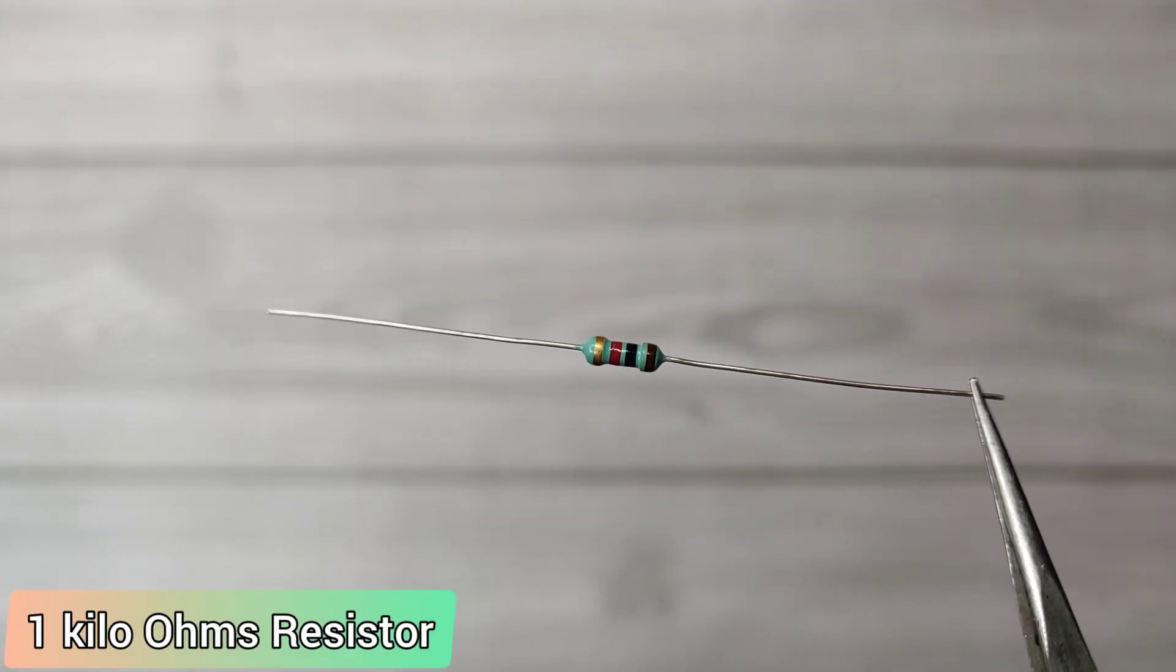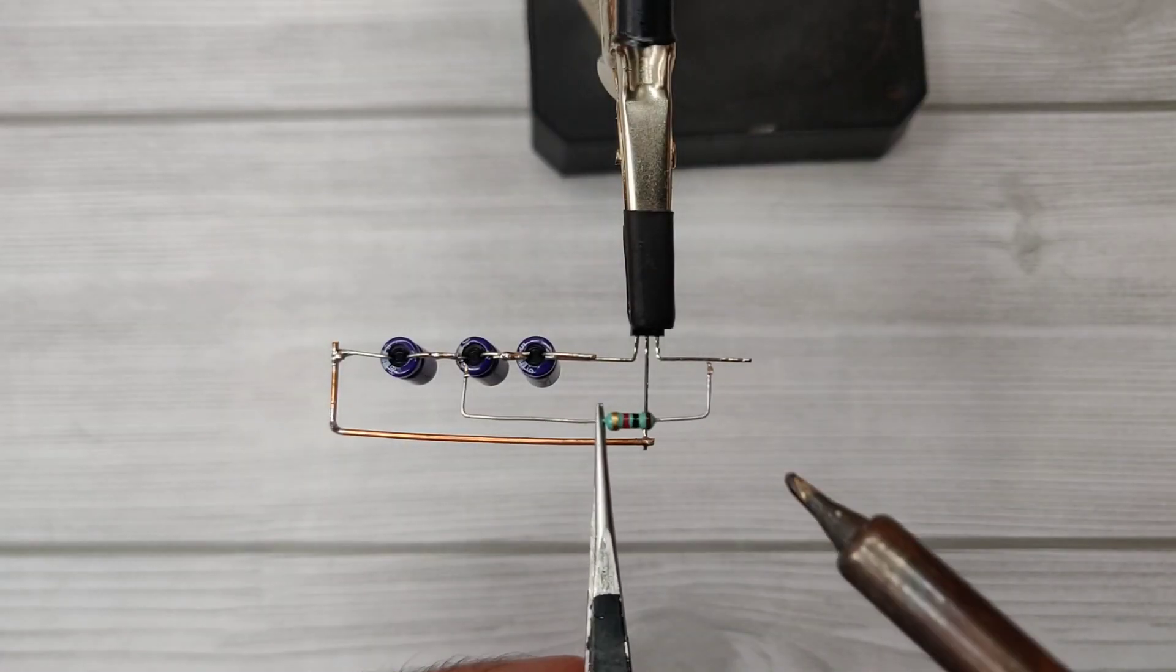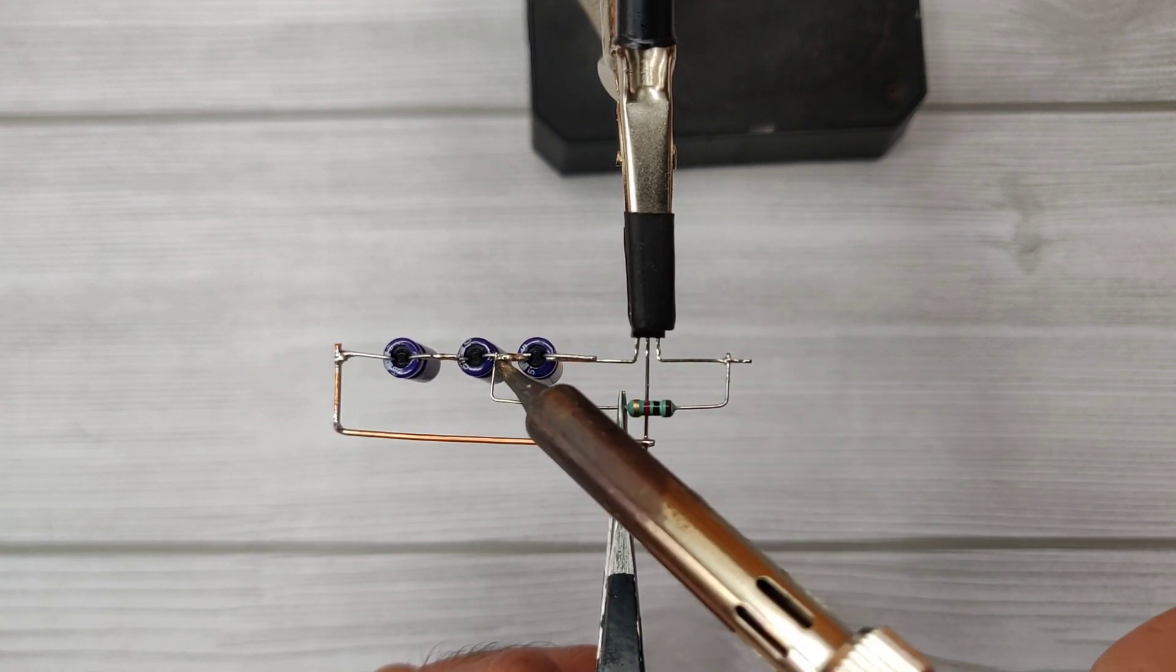Take a 1 kilo ohm resistor. Solder it between the transistor emitter and the negative of the first capacitor.